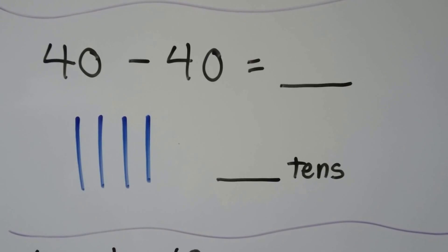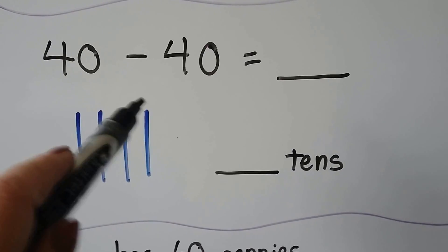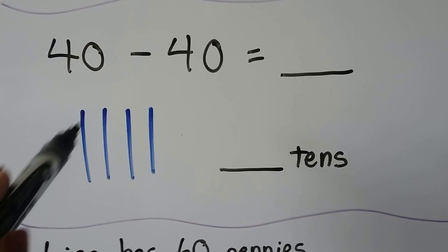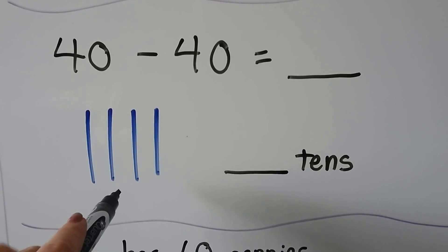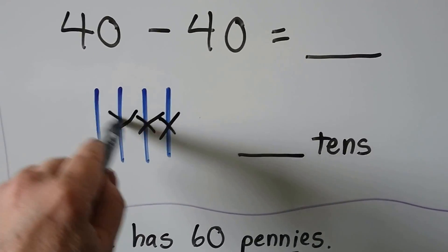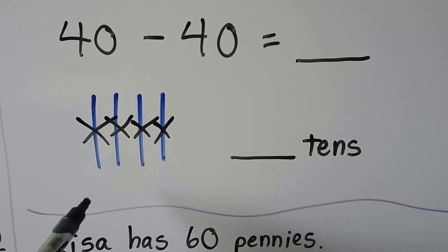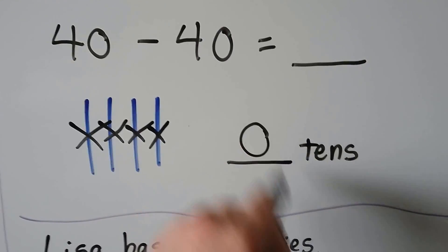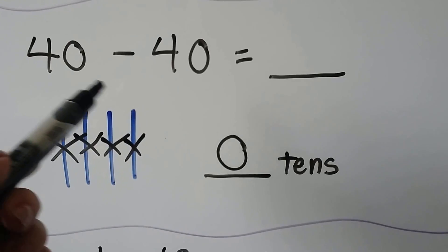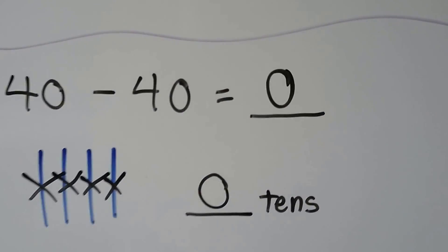Forty minus forty. We can draw four blue bars to represent four rods of ten: ten, twenty, thirty, forty. We need to take away forty, so we need to take away four tens: one, two, three, four. We crossed them all off. How many tens are left? Zero tens — we don't have any left, we crossed them all off. Forty minus forty is equal to zero. We took them all away.